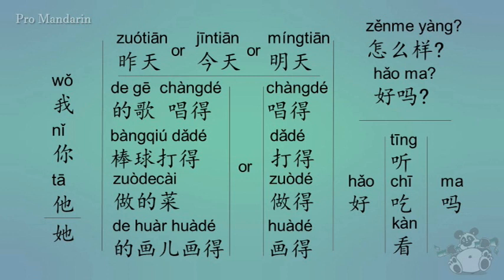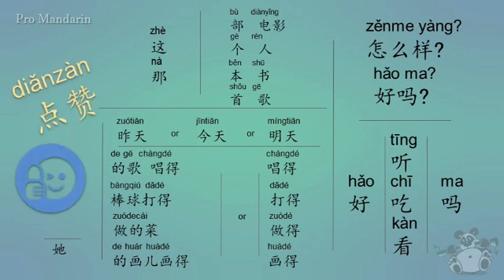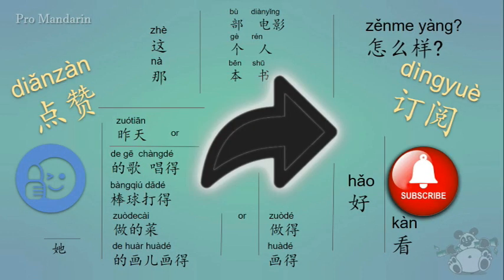Before we wrap up today's lesson, let's go over a few more questions you can answer in the comments below. First: does he look good? Second: how about tomorrow — we said míngtiān zěnme yàng, how else could you say that? And last: how would you say 'how were you yesterday'? That wraps it up for today's lesson. Please be sure to diǎn zàn, dìngyuè hé fēnxiǎng wǒ de shìpín — in other words, like, subscribe, and share my videos. Until next time, xià cì jiàn!